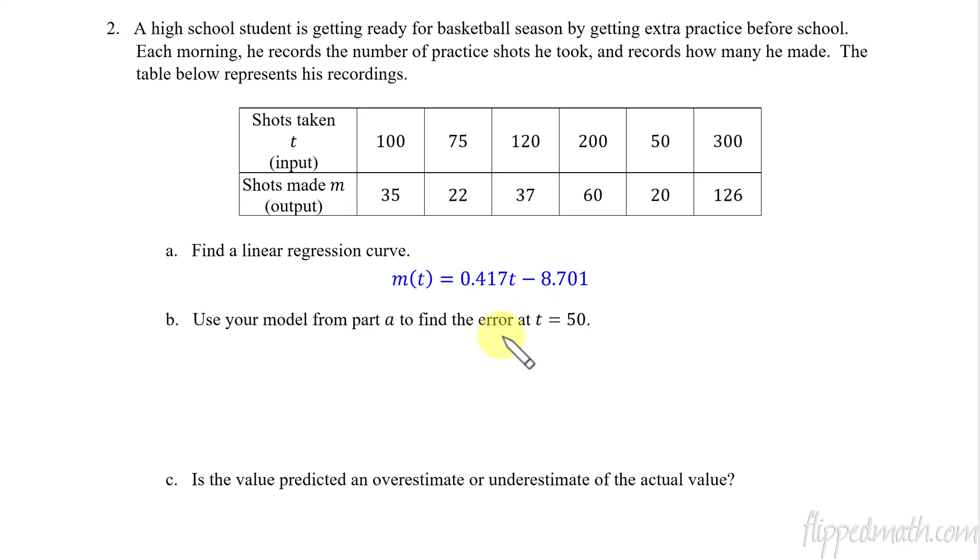If you want to write that down, get that down, save us some time here. So this is a linear regression curve. And we're going to use that model then to find some things. First, find the error at t equals 50. To do that, we find M of 50. So M of 50 equals 12.149. What did I do here? I plug the 50 into the model, plug the 50 in there, figure that out. So that's 12.149. That's not the error. That's just what does M of 50 equal? Now we want to compare that to the actual. We're looking at the predicted value minus the actual. That gives us the error. So the predicted is the model. The model predicts for us.